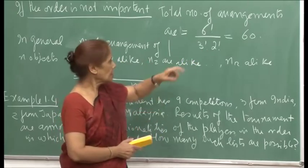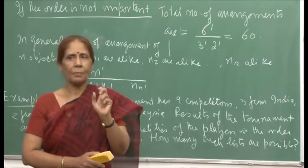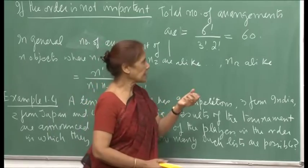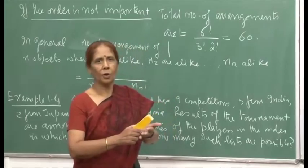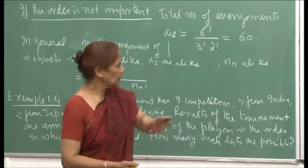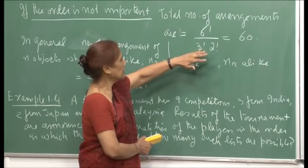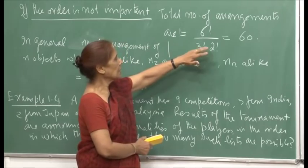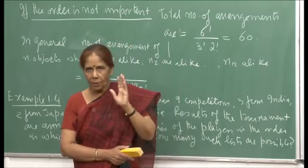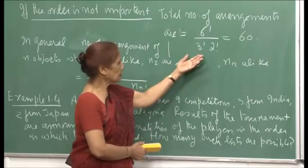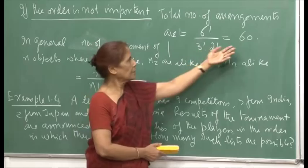Similarly, if I leave everything intact and only disturb the arrangement of the maths books, since I am not differentiating between the authors, those arrangements are not different. Whether author D or E comes first does not matter. So if the order is not important, we divide and the total arrangements come out to be 60, not 720.